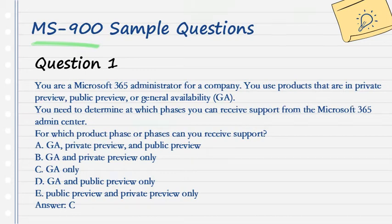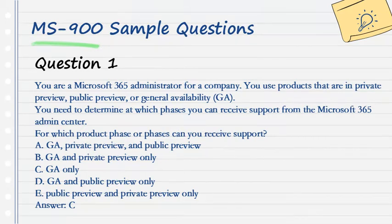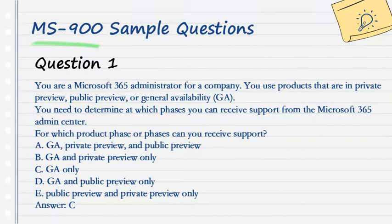Question 1. You are a Microsoft 365 Administrator for a company. You use products that are in private preview, public preview, or general availability. You need to determine at which phases you can receive support from the Microsoft 365 Admin Center. For which product phase or phases can you receive support? A. GA, Private Preview, and Public Preview. B. GA and Private Preview Only. C. GA Only. D. GA and Public Preview Only. E. Public Preview and Private Preview Only. Answer: C.